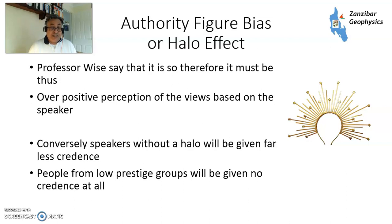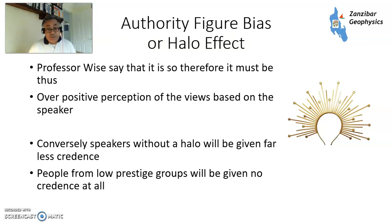Then there's the authority figure bias or the halo effect. Professor Wise says it must be like this, therefore it must be true because Professor Wise is a very wise person. A positive perception may be based on the views of the speaker, whatever their particular prejudices or values are. If the speaker is from your particular group, or a group with a lot of prestige, or the speaker themselves has a lot of prestige, people can give their views more validity than perhaps they really deserve. Conversely, speakers without the halo will be given less credence — and people from low-prestige groups will be given no credence at all. It can be a very serious problem indeed.